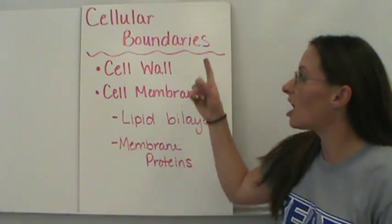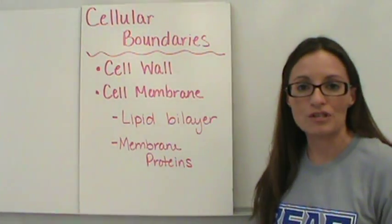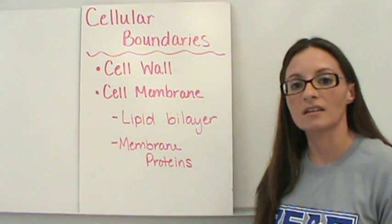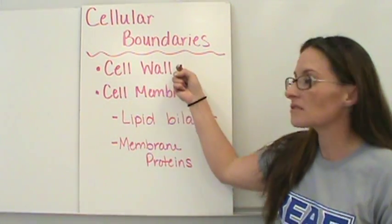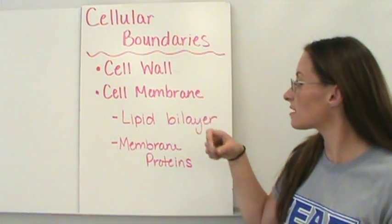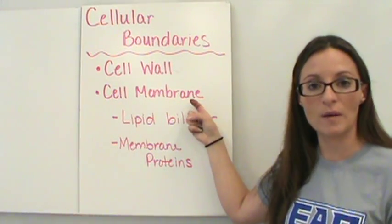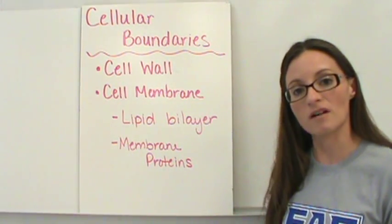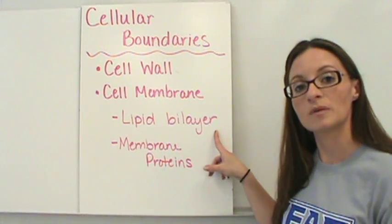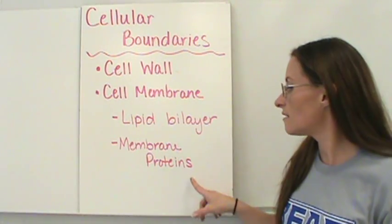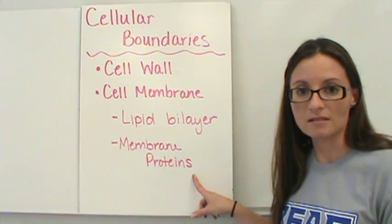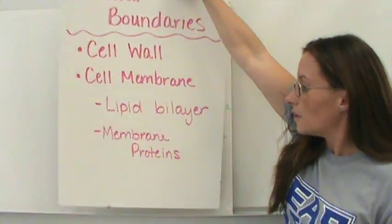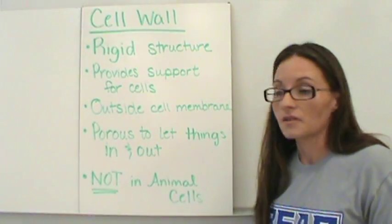Welcome to today's lesson on cellular boundaries. Today we're going to talk about two major boundaries on the cell. First we have the cell wall and second we have the cell membrane. The cell membrane is going to be made up of two different parts: the lipid bilayer and the membrane proteins. We're going to go into detail on all of those.